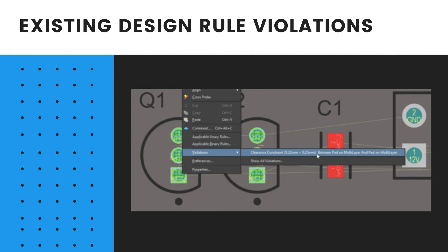You might have noticed that the transistor pads are showing a violation. Right-click over a violation and select Violations in the right-click menu as shown in this image. The details show that there is a clearance constraint violation between a pad on the multi-layer and a pad on the multi-layer, where the clearance is 0.22mm, which is less than the specified 0.25mm.